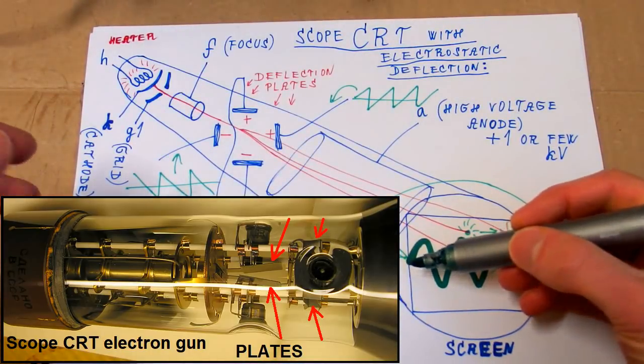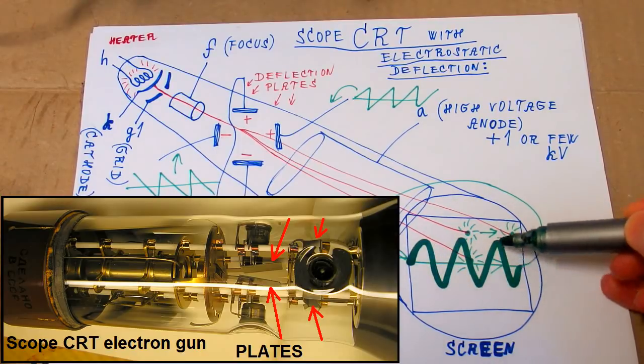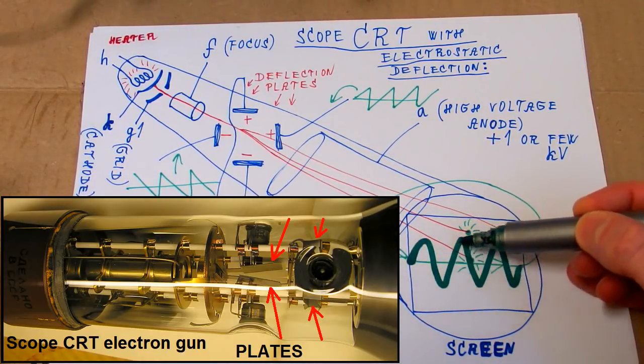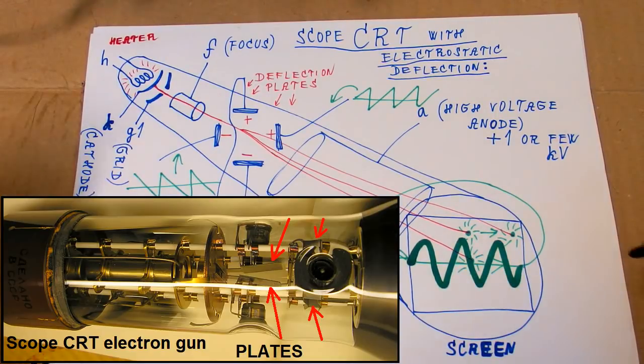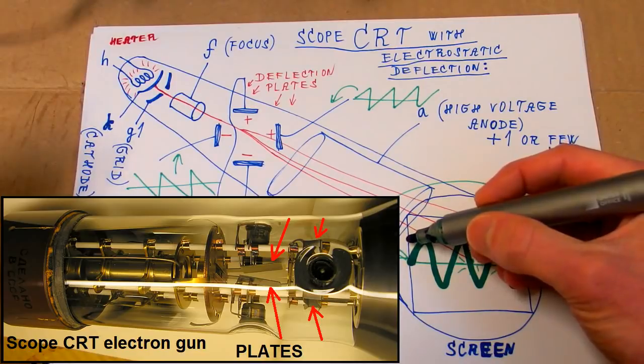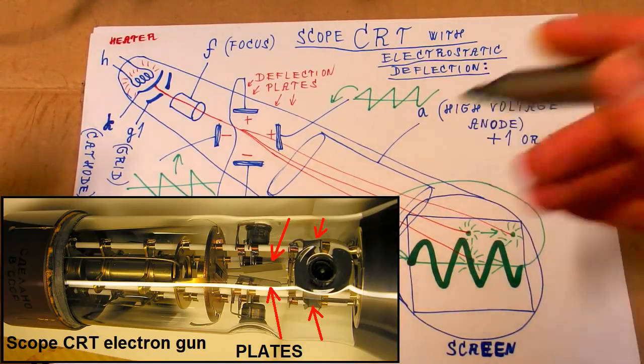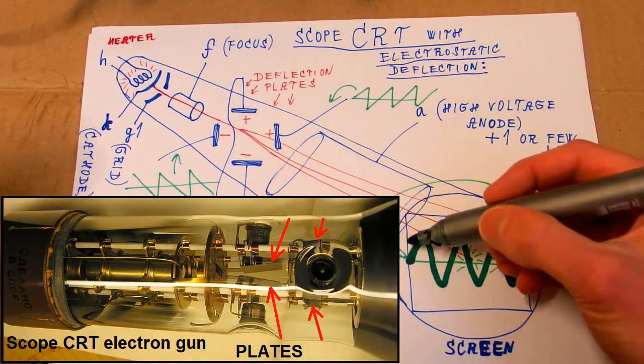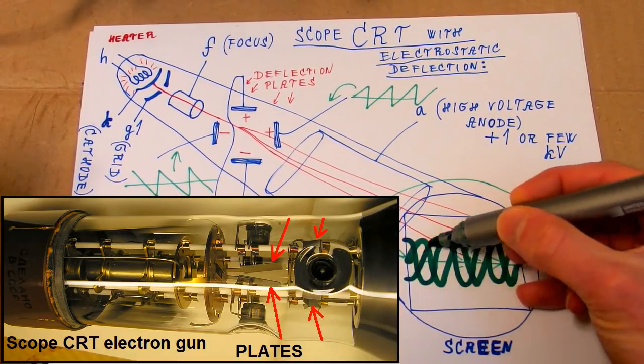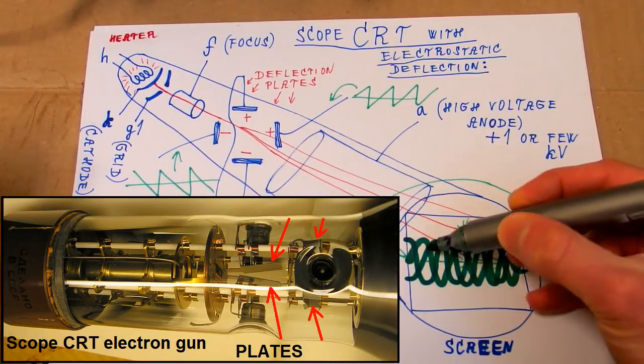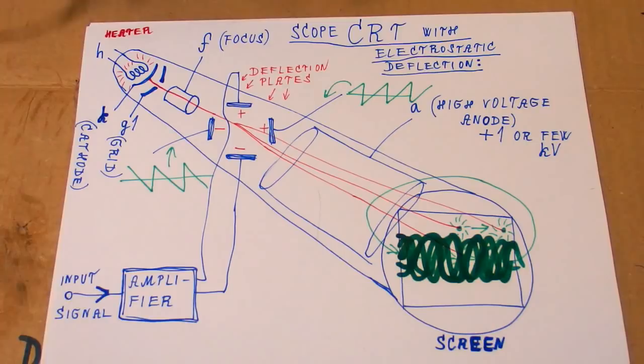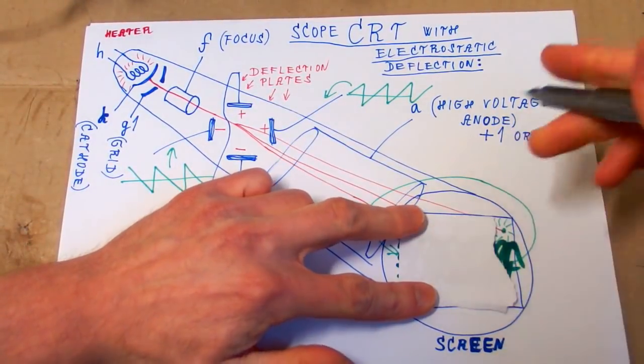Now it starts always from zero and it goes like this. And in the next cycle it goes the same way. If it was starting in a random place, it would basically be out of sync and you would see just complete mess. If it was starting from random positions, it would look like this.